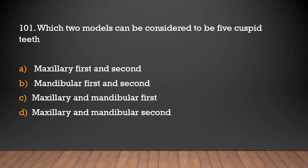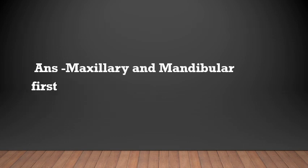Which two molars can be considered to be bicuspid teeth? Options: maxillary first and second; mandibular first and second; maxillary and mandibular first; maxillary and mandibular second. Answer: Maxillary and mandibular first.